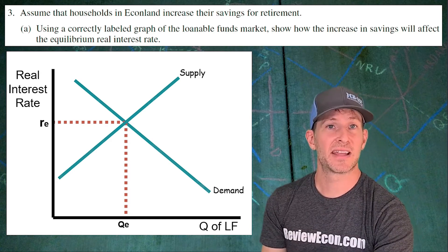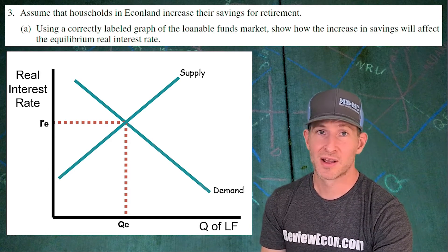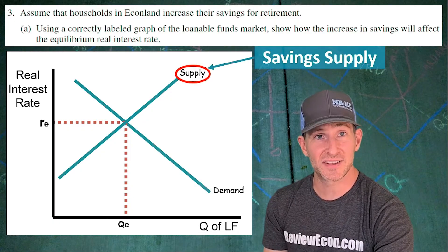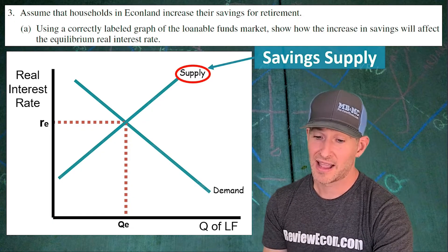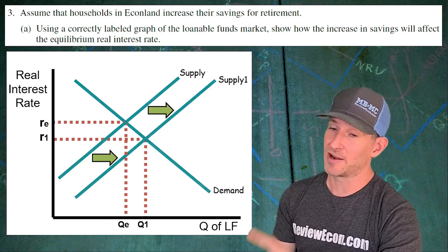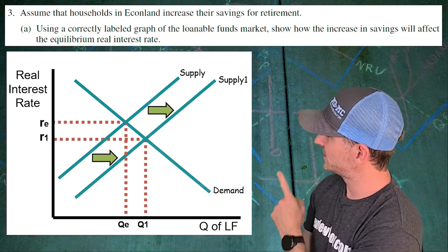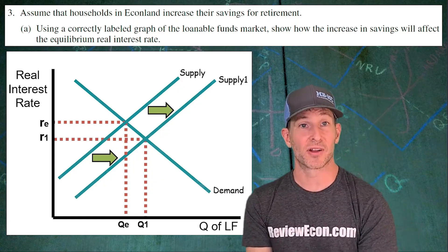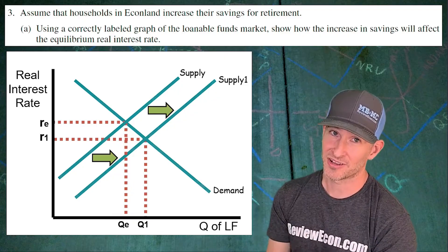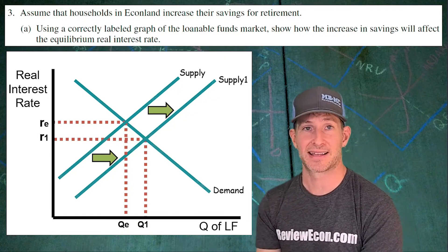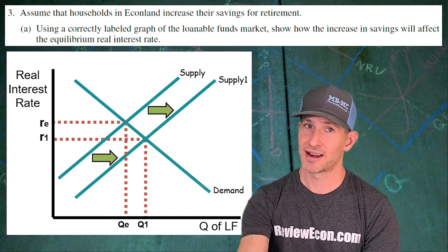So what does savings have to do with the loanable funds market? That supply curve — I call it the savings supply. When we see an increase in savings, we're going to see a rightward shift of that supply curve, which is going to drive down the real interest rate. It'll also increase the equilibrium quantity on the x-axis. Draw it out like that and you've got yourself your points.